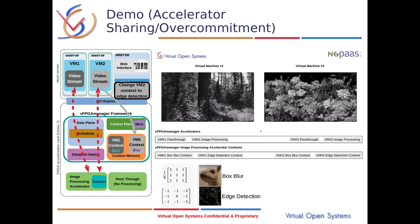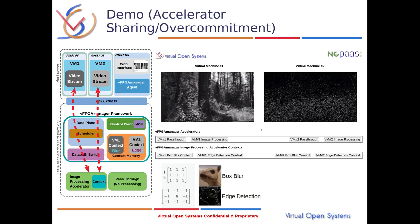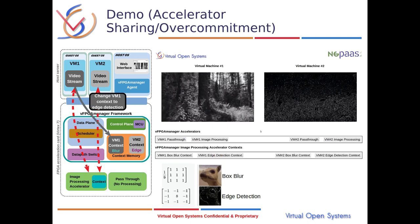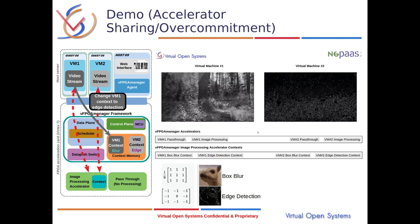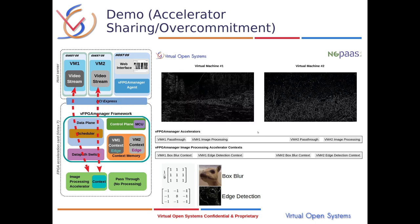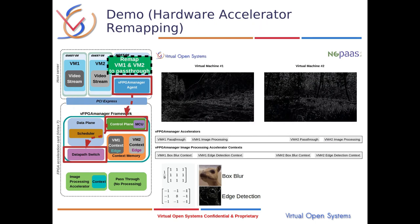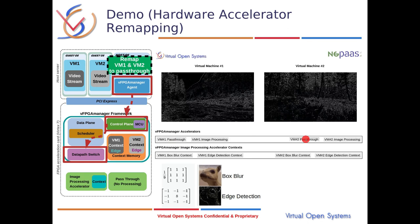The scheduler allows the sharing of the image processor with different contexts. The virtual machine that gets priority also loads its context for processing. Finally, we remap both virtual machines to the pass-through part of the FPGA.